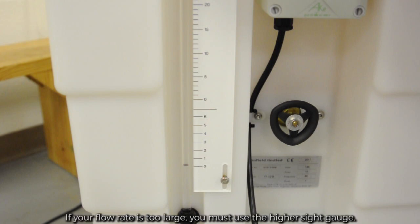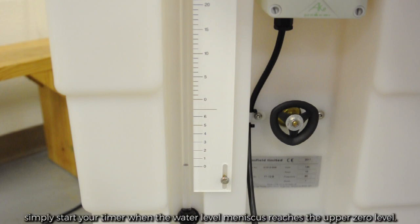If your flow rate is too large, you must use the higher sight gauge. In order to accomplish this, simply start your timer when the water level meniscus reaches the upper zero level.